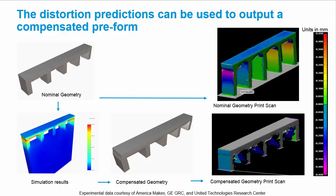To compensate for this distortion, we want to offset the nominal geometry in the opposite direction from the anticipated distortion. The theory is that the inevitable distortion will displace the part into the shape we want.